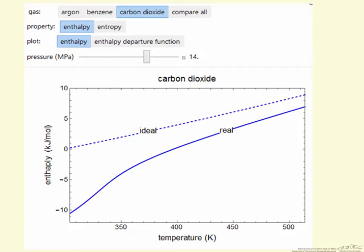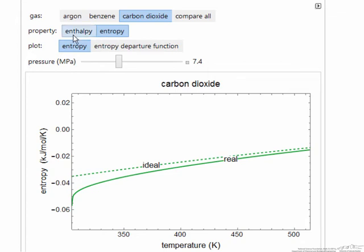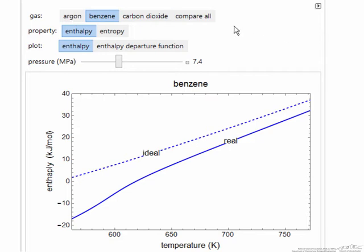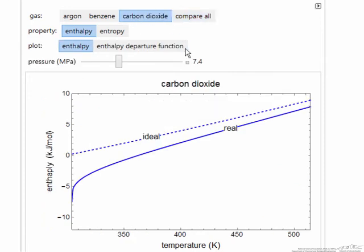Let's look at this simulation and the behavior. Here's the simulation, and you can see we can select either enthalpy or entropy, and then we can change the gas. Or we can compare all the gases, but now this is just at one pressure. Let's go back and look at carbon dioxide.